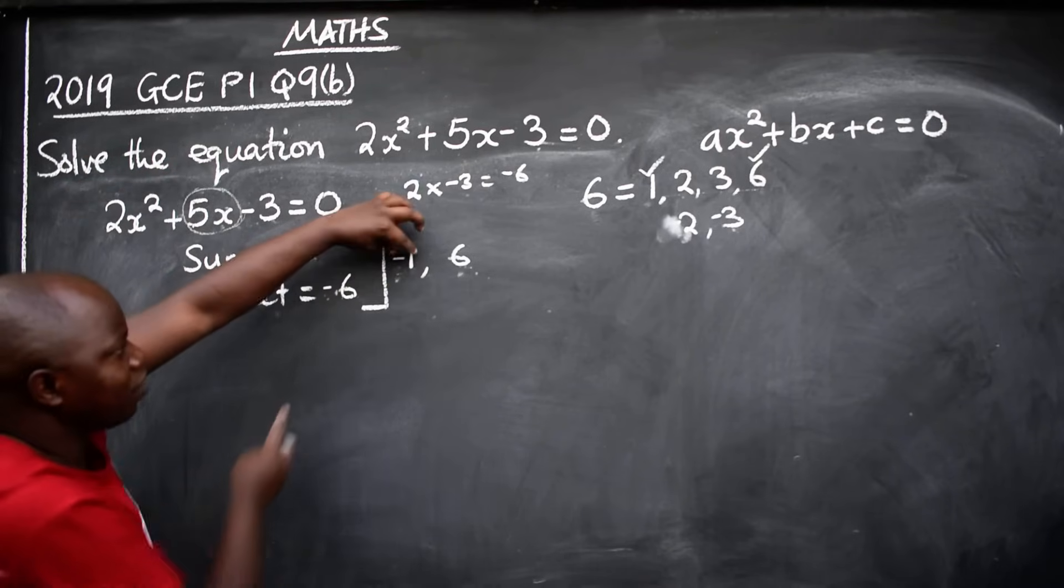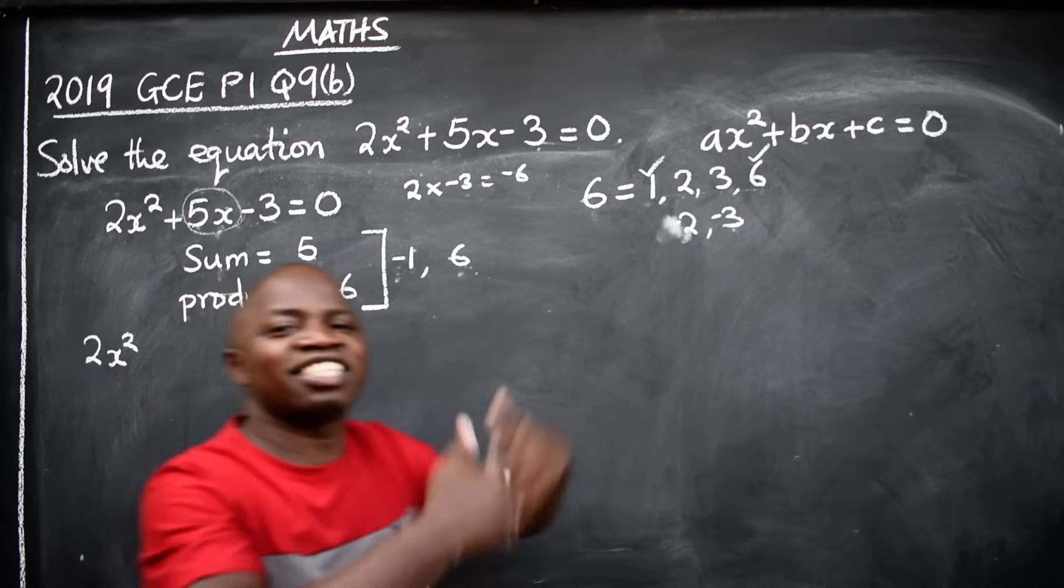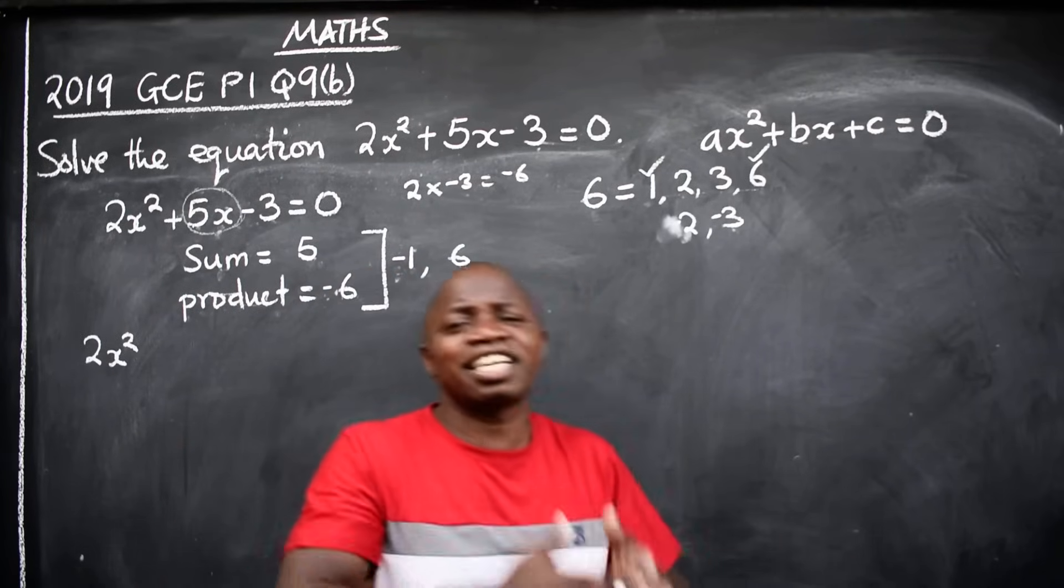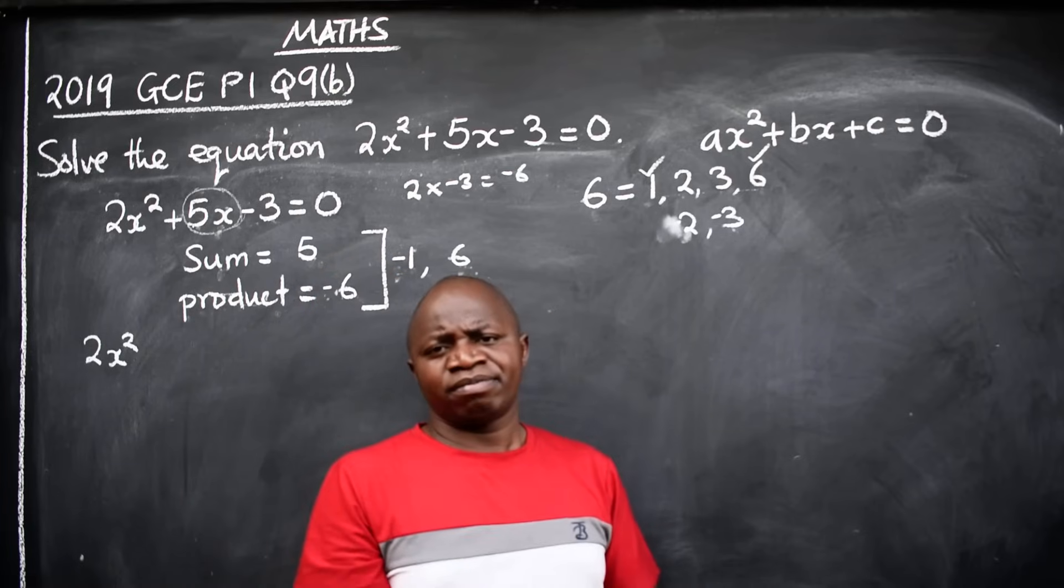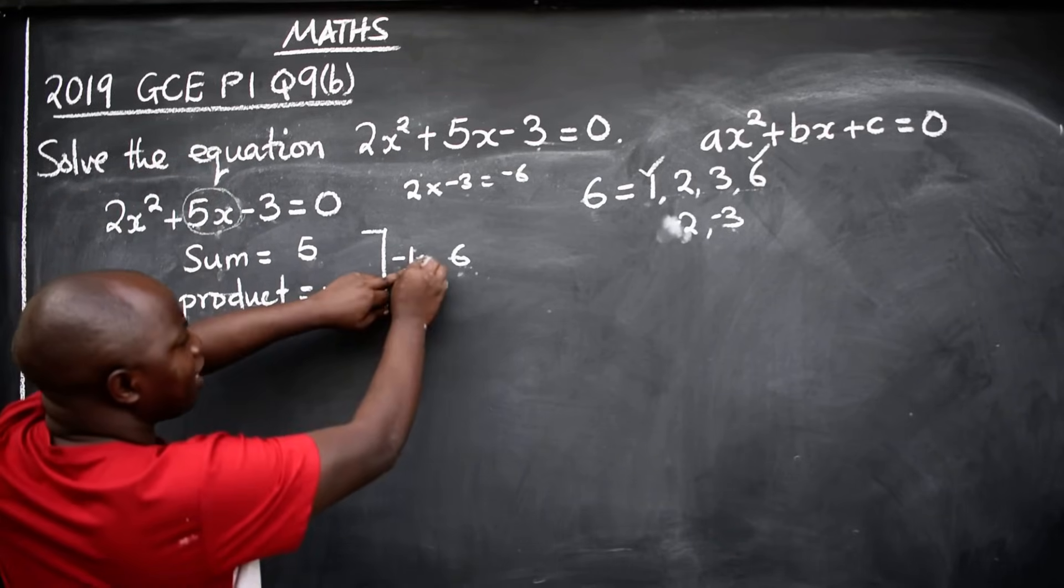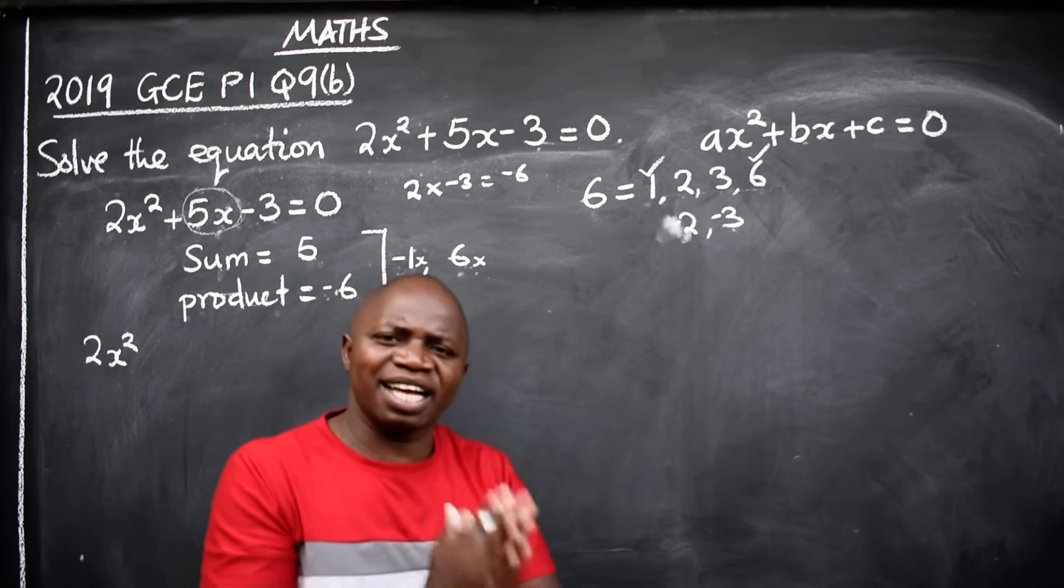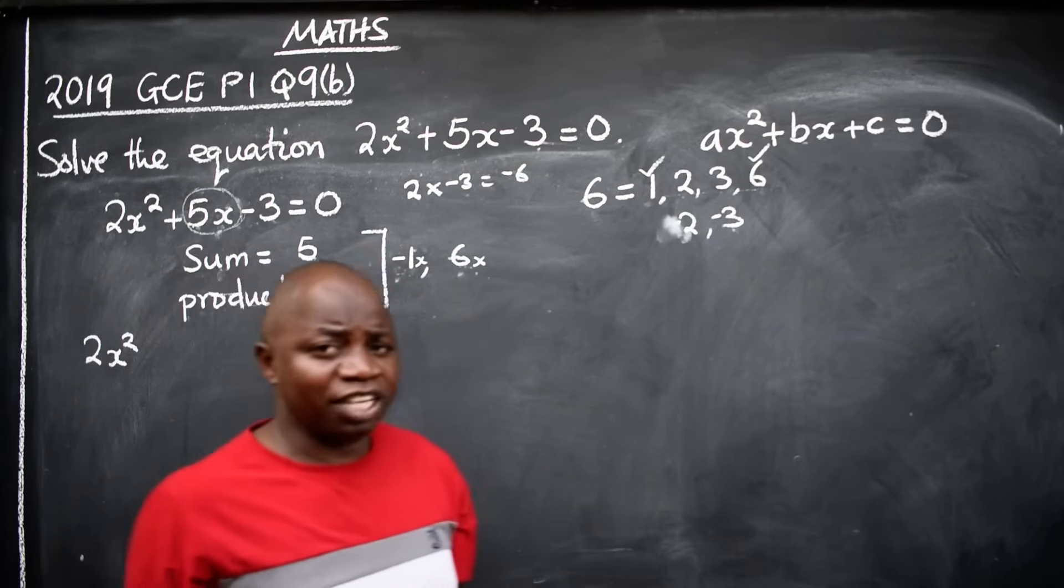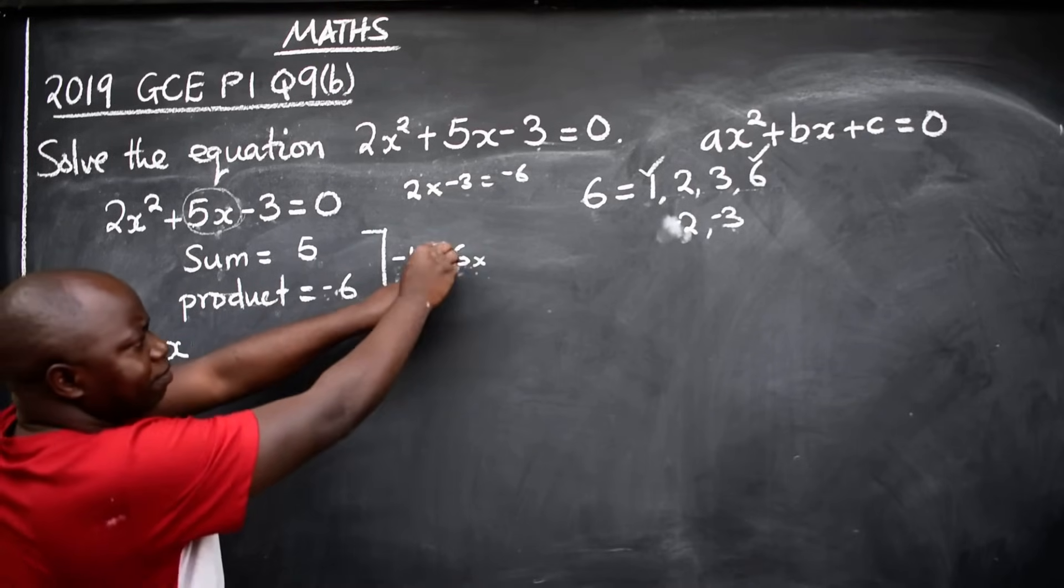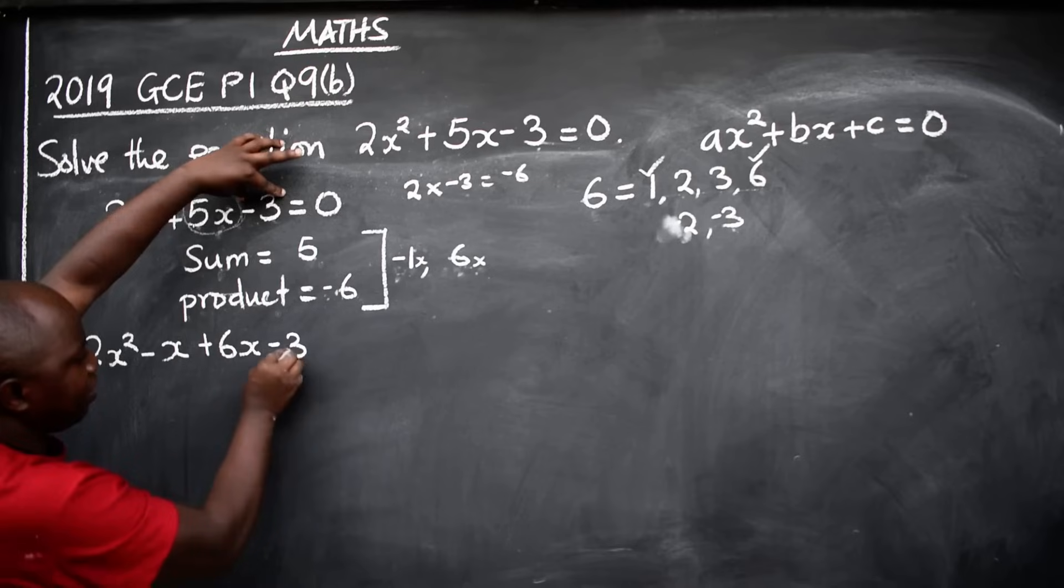In this case, we are going to factorize. Let's proceed. We are substituting now. We remove this, replace with these two. So we get 2x². Here we have -1, so -1x. Since where we are substituting this is x, these will have x. We cannot write -1x, that does not exist. It is only -x. You can't say -1x, that is repetition in mathematics. So -x. This is positive 6x. The last part is -3 = 0.